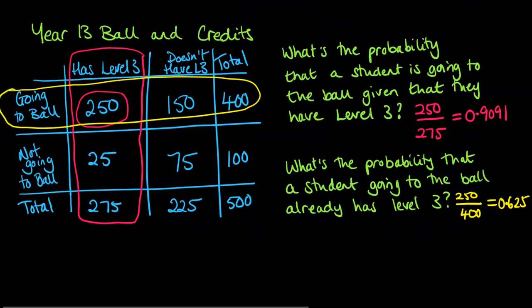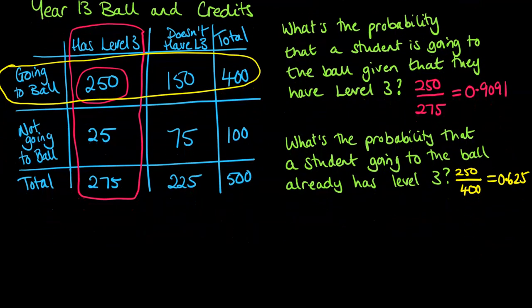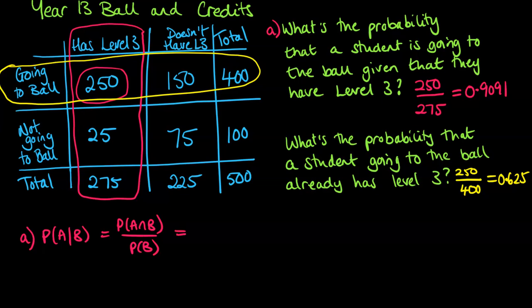If you're going to use the formulas on each of them, let's call this one A. The probability of A given B equals the probability of A and B over the probability of B. So the probability of A and B means a student is going to the ball and they have level 3. That is 250 out of our total of 500, divided by the probability of B, which was given that they have level 3. The chance of having level 3 is 275 out of 500, which comes to the same number we just saw there.